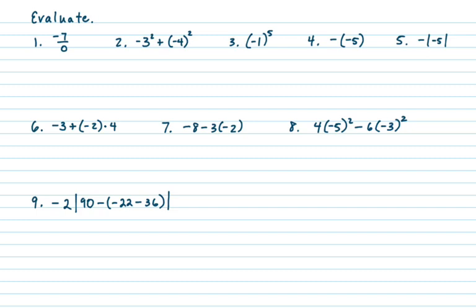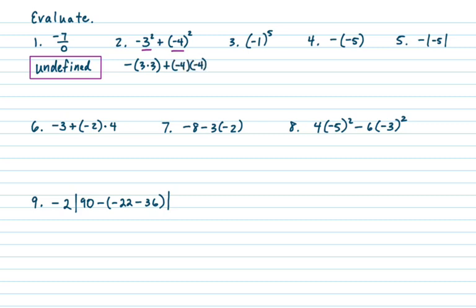On number one you have division by zero, so that's undefined. On number two you have negative 3 squared plus negative 4 squared — but notice the negative 3 has no parentheses while the negative 4 does have parentheses. For the first part the base is just 3, so negative 3 squared is negative 9. For the second part the base is negative 4, so it's negative 4 times negative 4, which is 16. So we get negative 9 plus 16, which is 7.